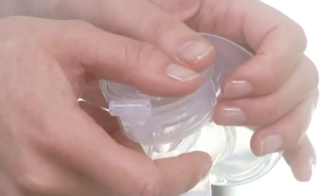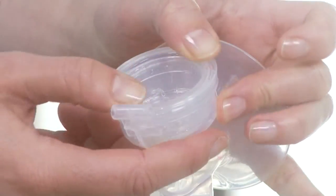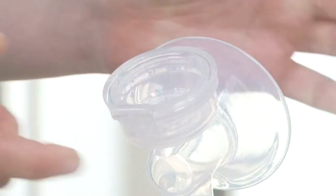Place the silicon diaphragm into the pump body from above. Make sure it fits securely around the rim by pressing down with your fingers to ensure a perfect seal.